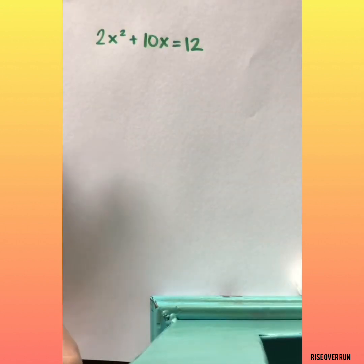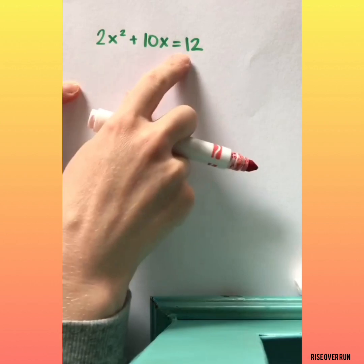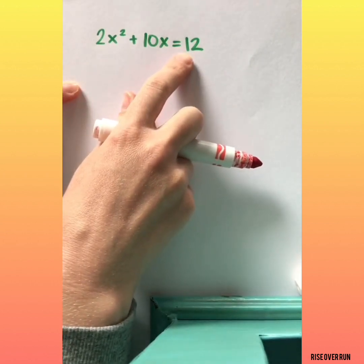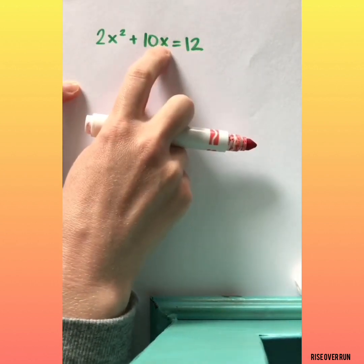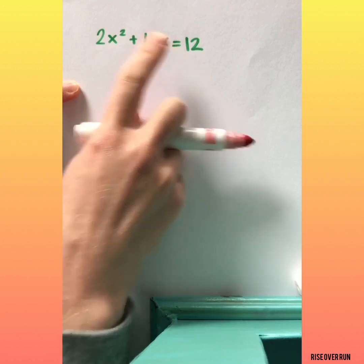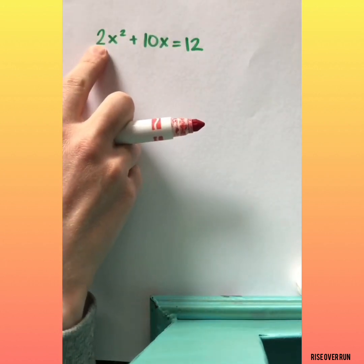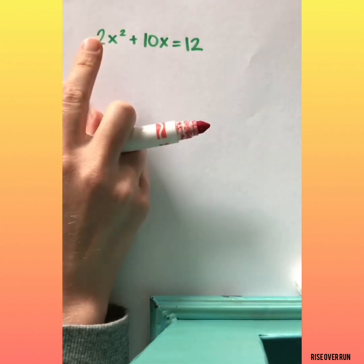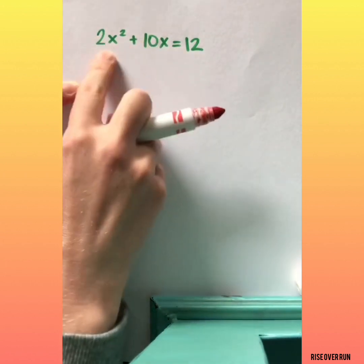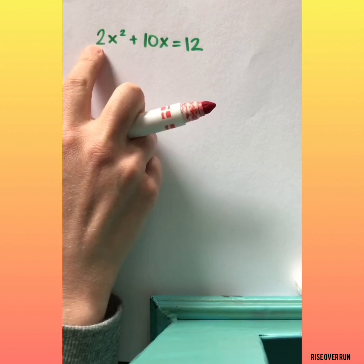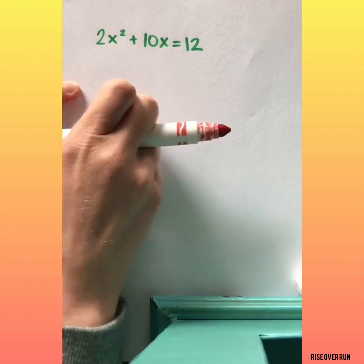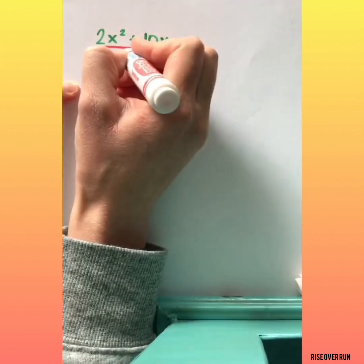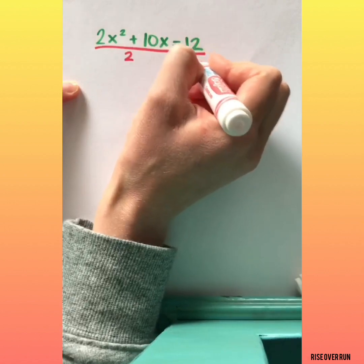A couple things to look out for when you're using completing the square. First thing, it doesn't have to be set equal to 0. If you want to move that over, you can, but it's not necessary. The other thing is we need this coefficient in the front, a, we need it to be 1. So if it's not 1, you need to do some work to make it 1. In this case, we could divide everything by 2. Be sure that you divide every single term by 2.